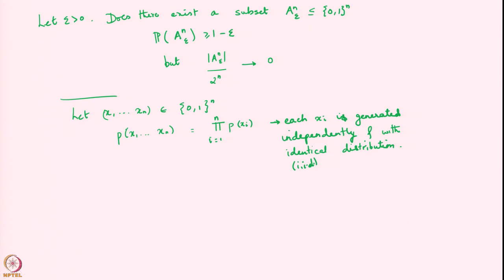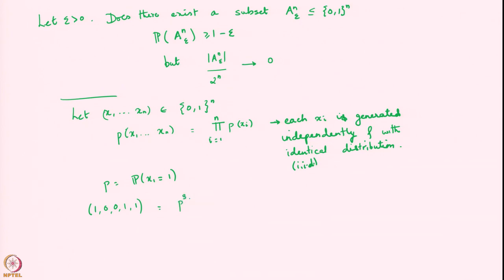For example, suppose p is the probability that x_1 equals 1. Then what is the probability of seeing the string 1, 0, 0, 1, 1? Well, this string has three 1s and two 0s, so its probability is p^3 times (1-p)^2. The probability of this particular string equals p cubed times (1-p) squared.